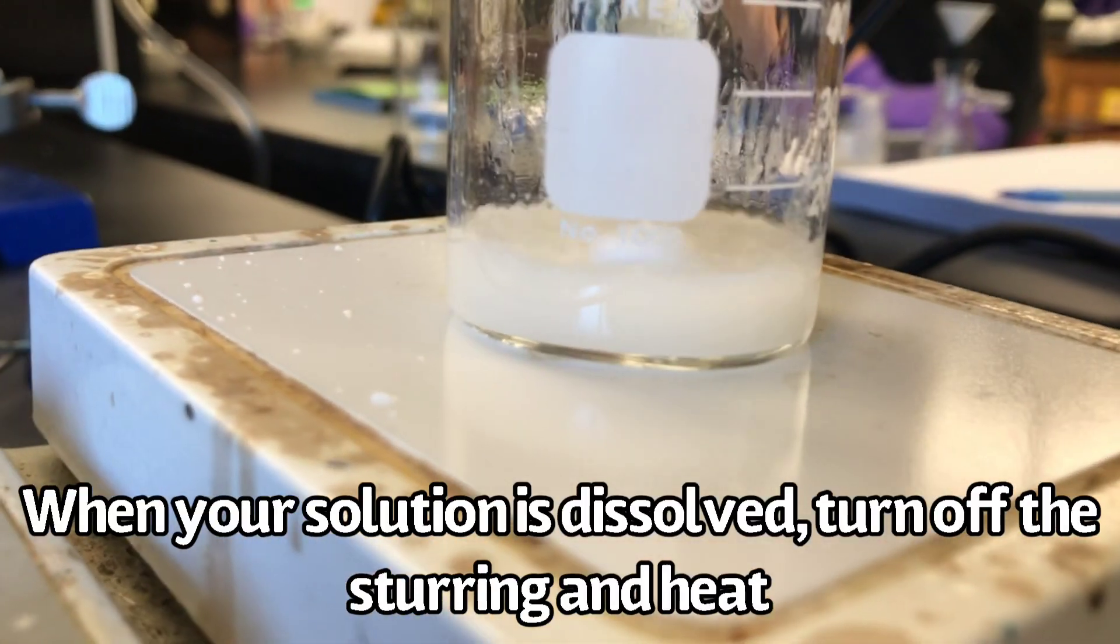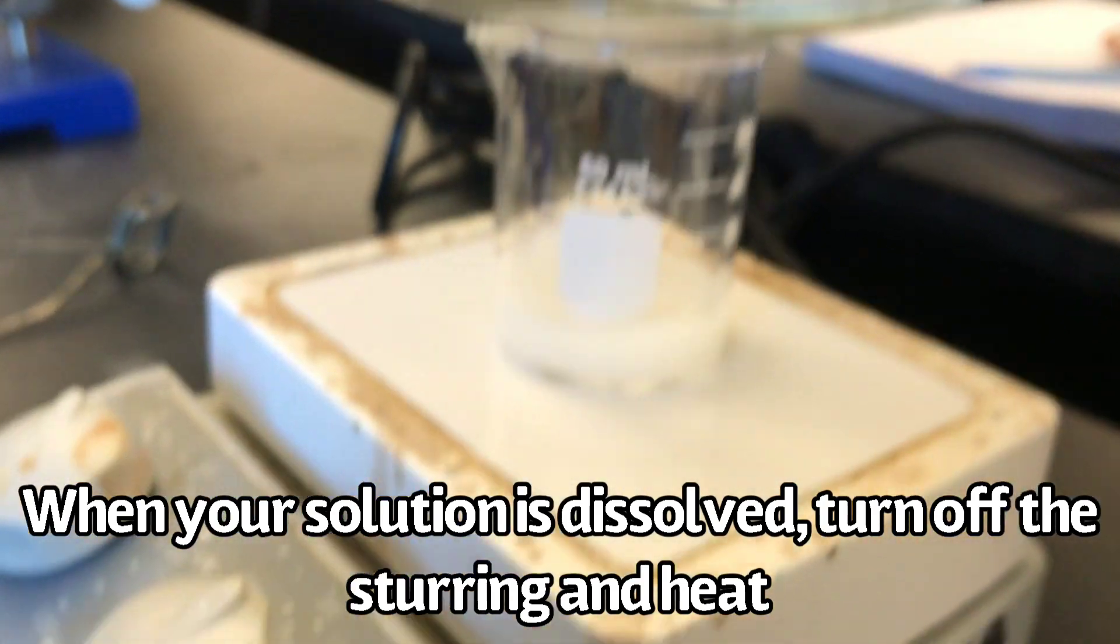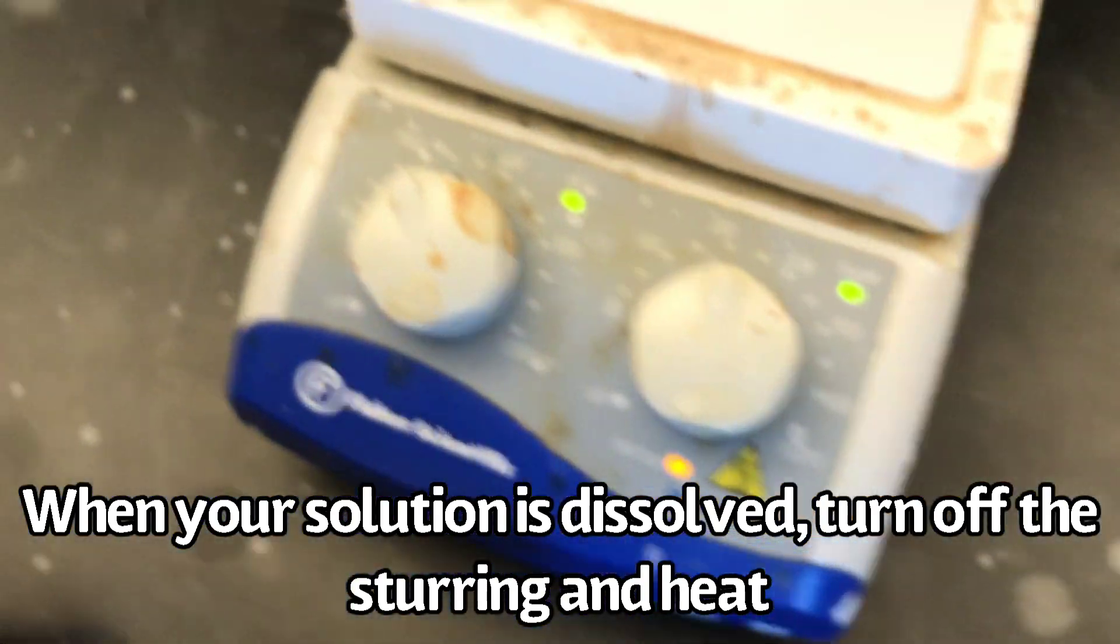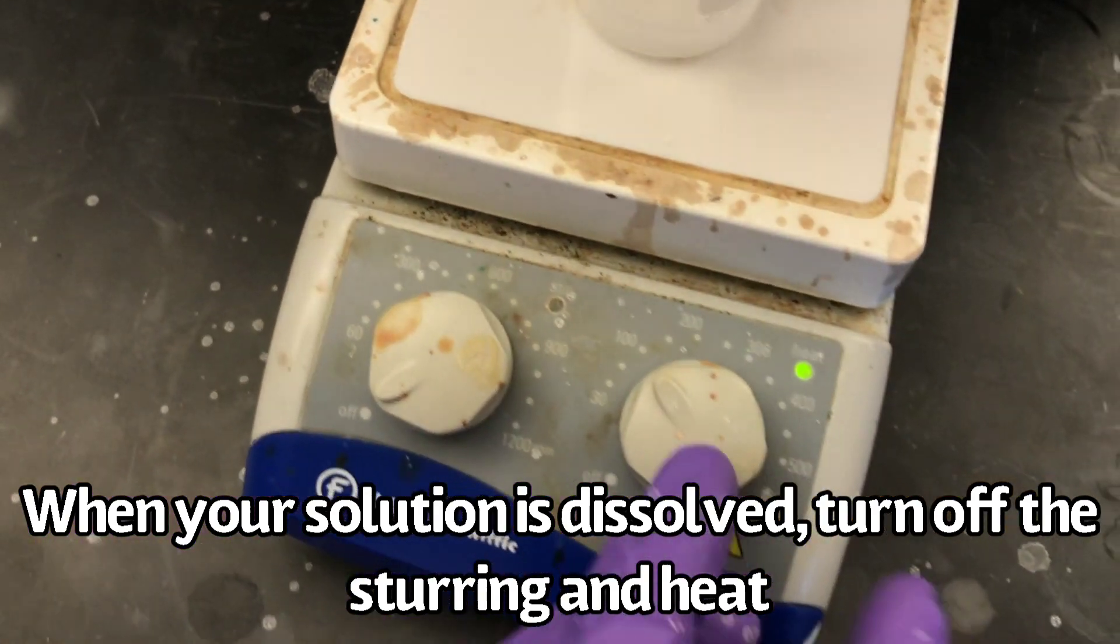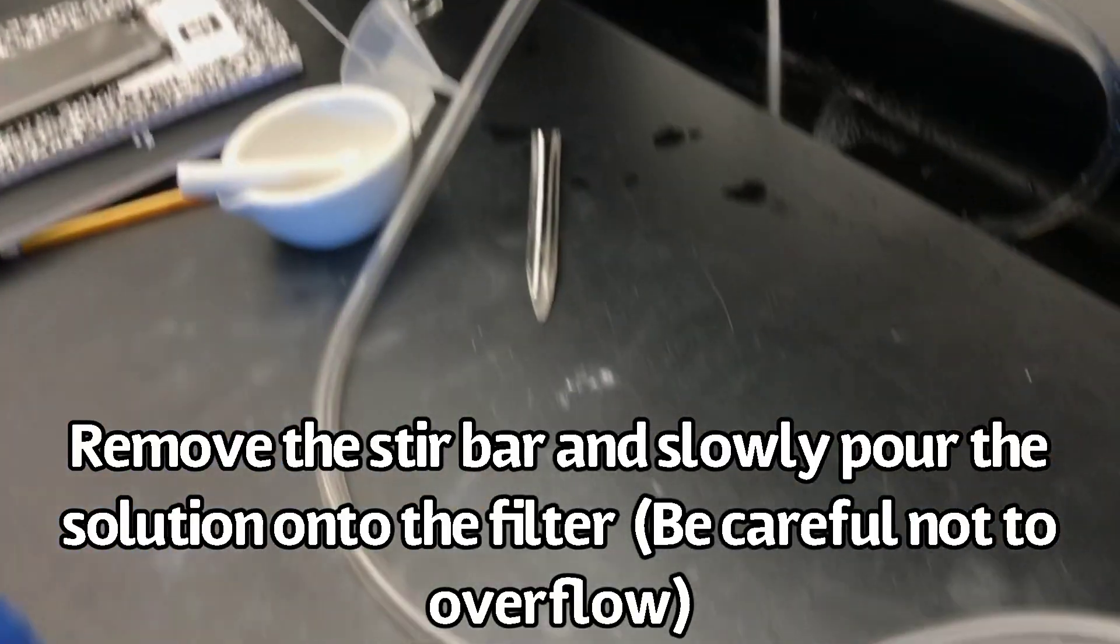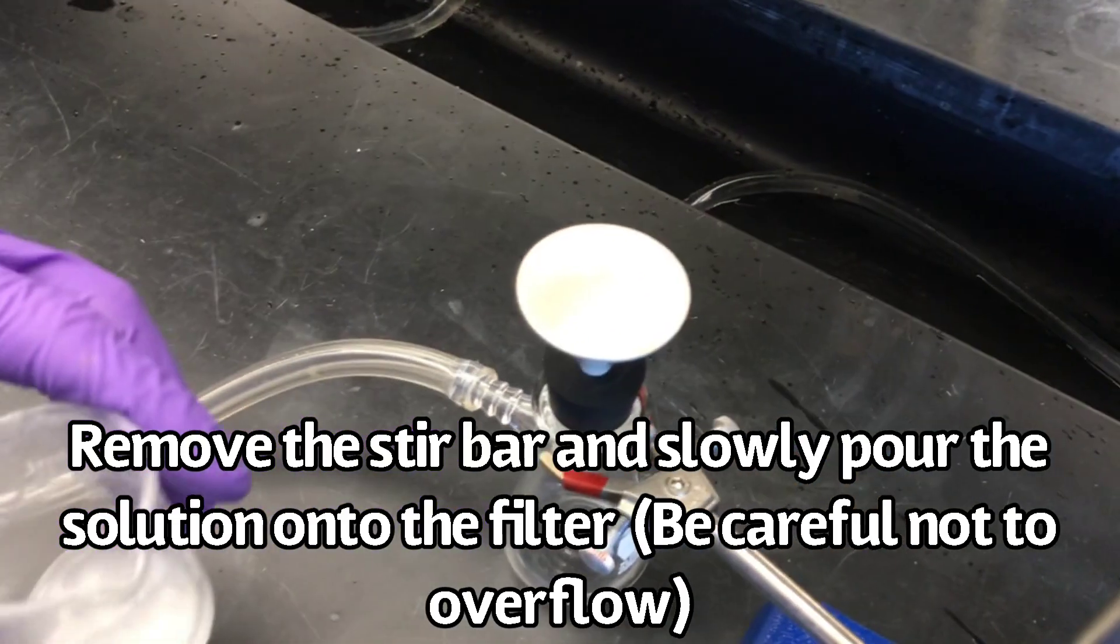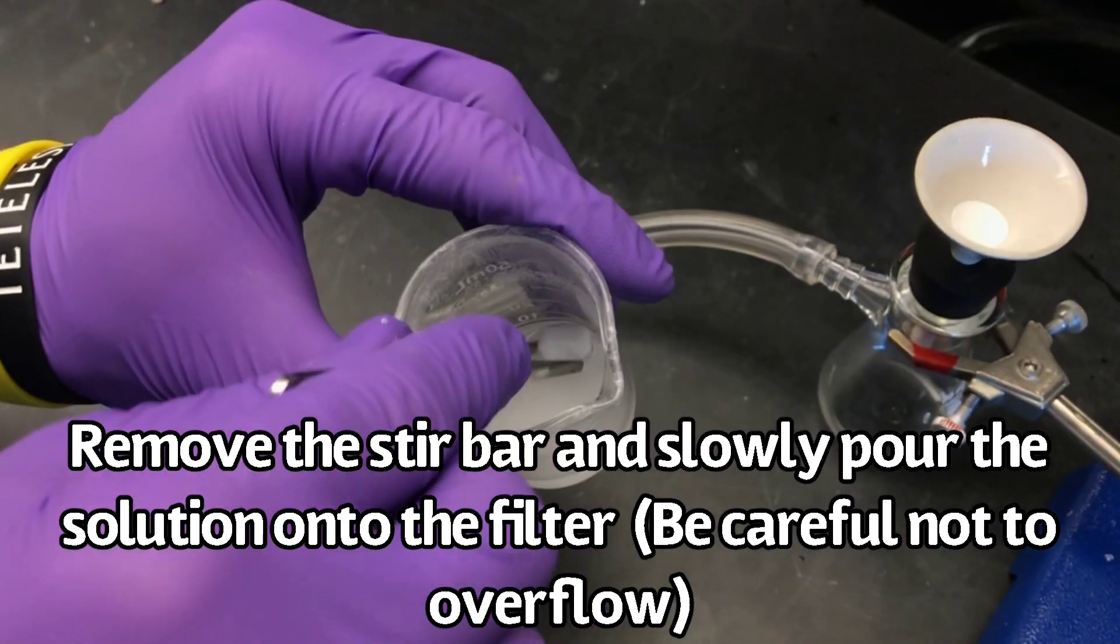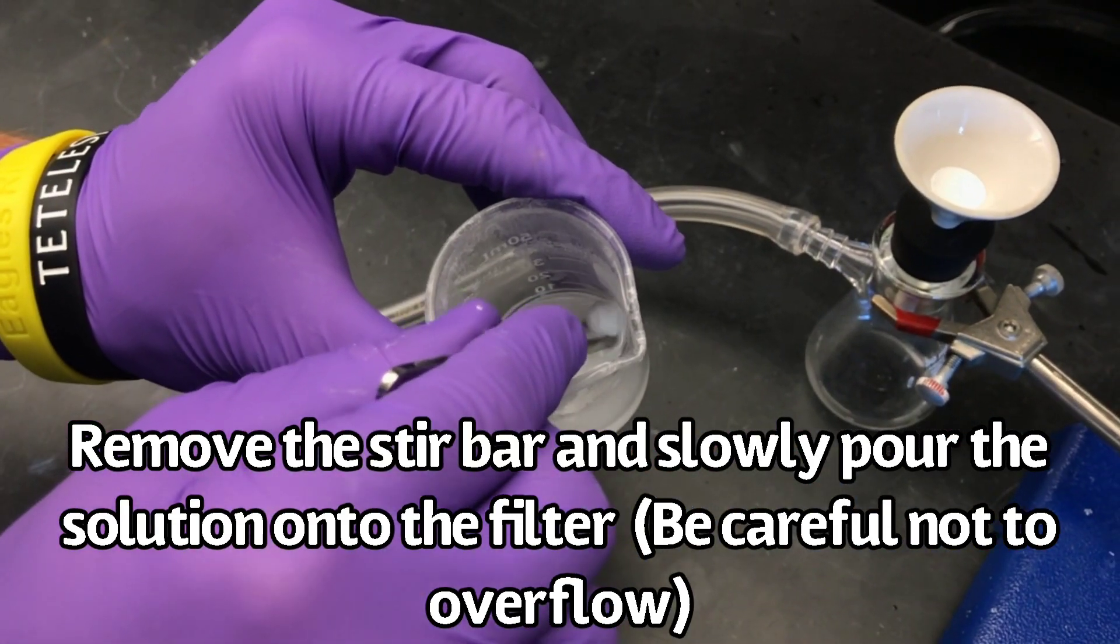When the solution is completely dissolved, turn off the heat and the stirring. Remove the stir bar and pour the solution into the filter, being careful not to overflow the funnel.